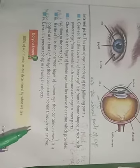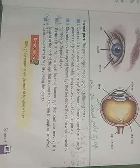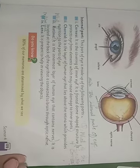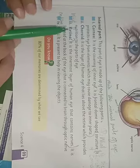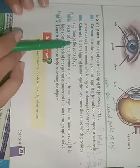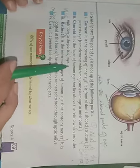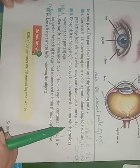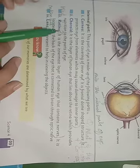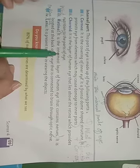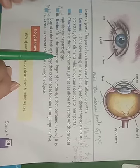The next internal part is the layer of the human eye that lies above the retina, which provides nutrients to the parts of the eye.